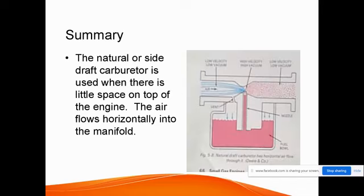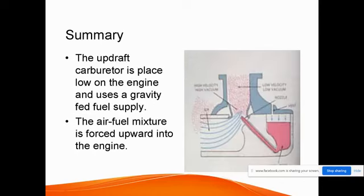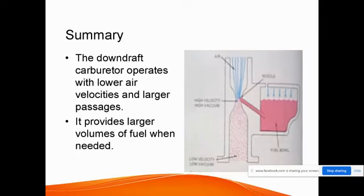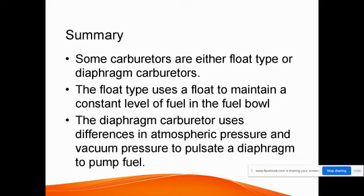In summary, all engines have one of four carburetor types: natural or side draft, updraft, and downdraft. Natural or side draft is used when there is little space on top of the engine. Updraft carburetors are placed low on the engine using a gravity-fed fuel system. Downdraft carburetors operate at lower air velocity and provide a larger volume of fuel. Carburetors are either float type or diaphragm type — the float type uses a float to maintain a constant fuel level.